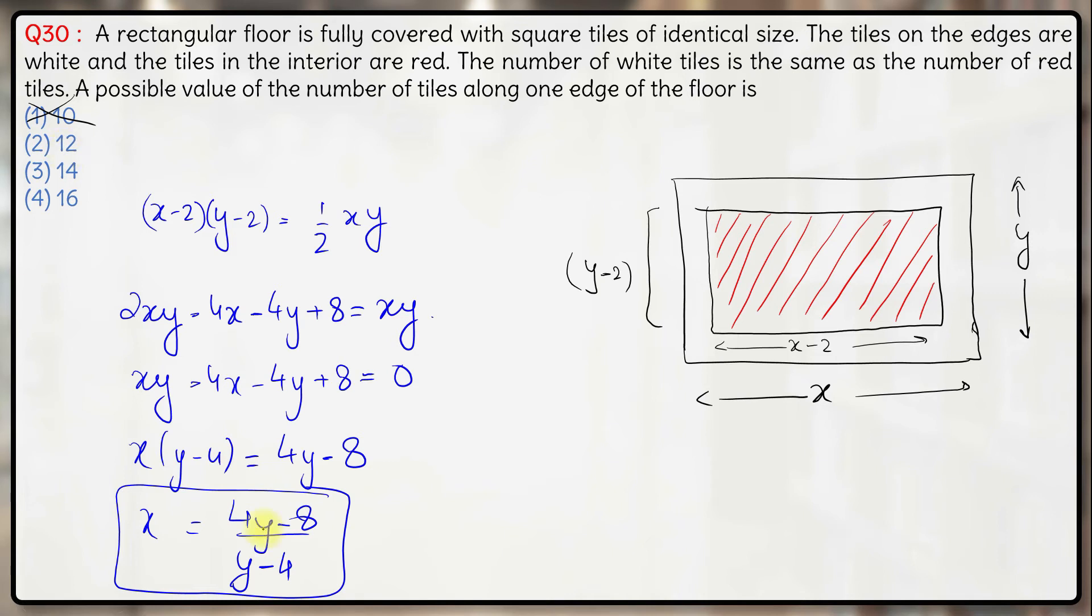Let's check for 12. Can y be equal to 12? 4 into 12 is 48, 48 minus 8 is 40 and 12 minus 4 is 8 here. So 40 by 8 is 5. So if there are 12 tiles along one edge, there will be 5 tiles along the other edge, hence option 2 will be the right answer here. Option 2 is the correct answer.